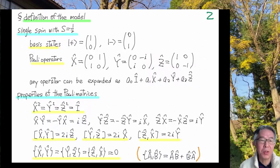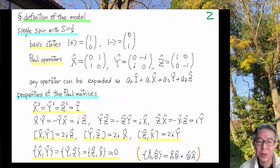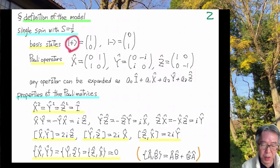Okay, so now I'm going to define the model carefully. So before going into spin chains, I'm going to discuss a single spin with spin one half. So then, as you know, the basis states are this upspin and downspin. They can be represented as these two-dimensional vectors. And then spin is described by Pauli operators x, y, z.